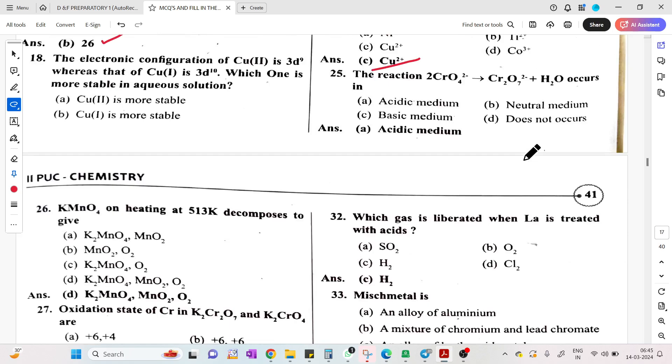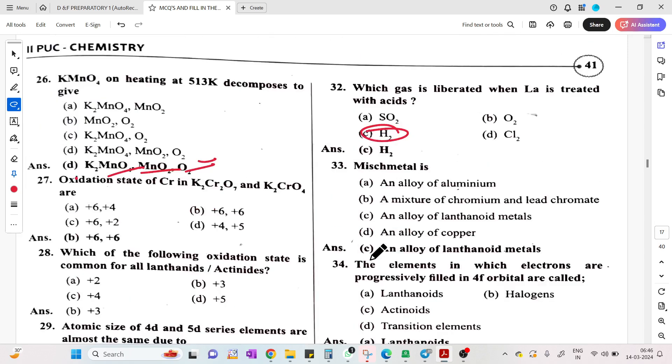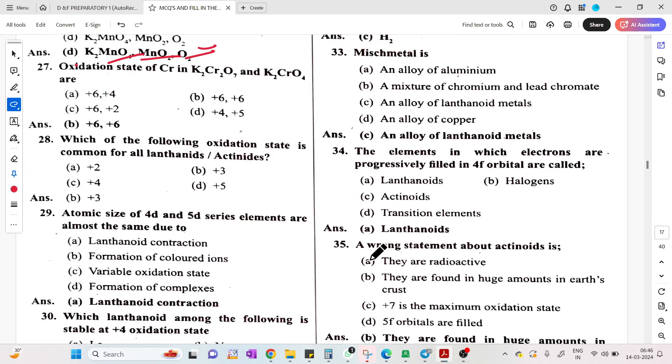A reaction: CrO4 2- to Cr2O7 2- plus S2O3 2-. Tricky question - this takes place at acidic condition. Reverse takes place at basic condition. KMnO4 on heating at 513 Kelvin gives K2MnO4 and MnO2 plus O2 - very important. Which gas is liberated when lanthanum is heated with acids? Hydrogen gas.